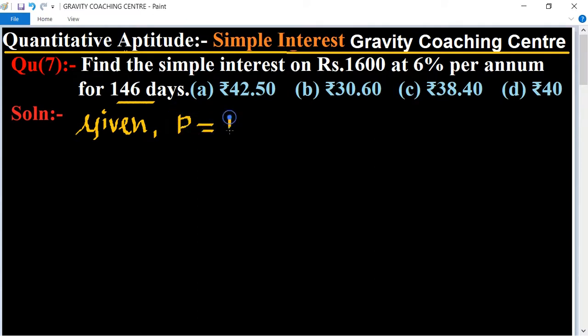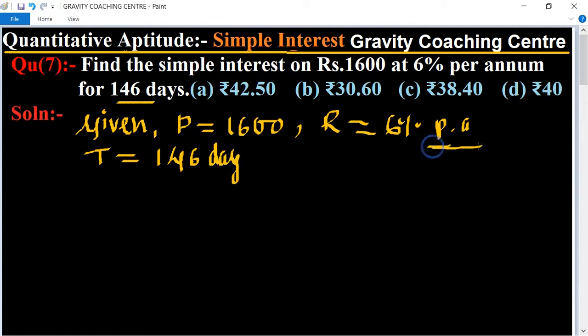Rate of interest equal to 6% per annum, and time equal to 146 days. Rate of interest is in per annum, so we will change days into years, so divided by 365 years.